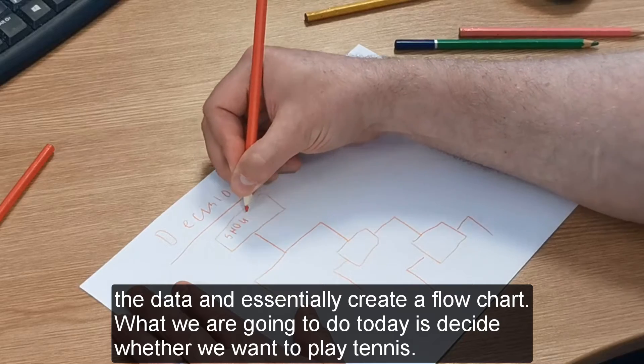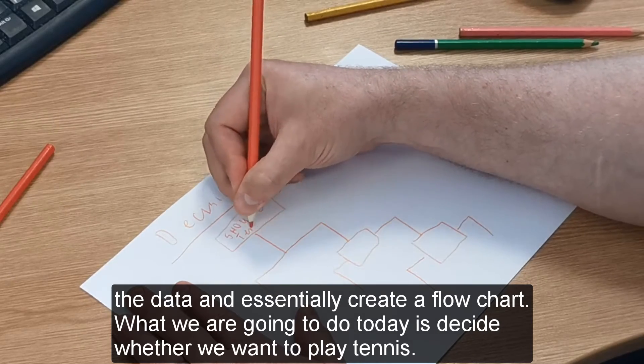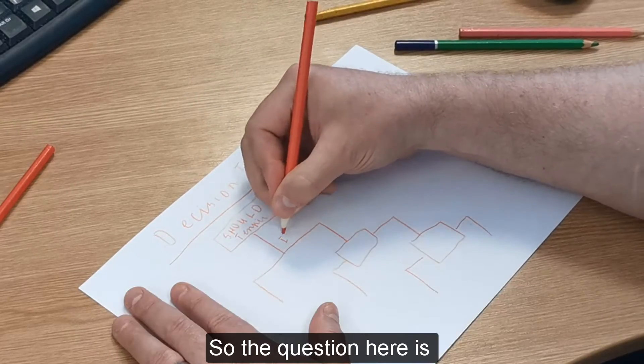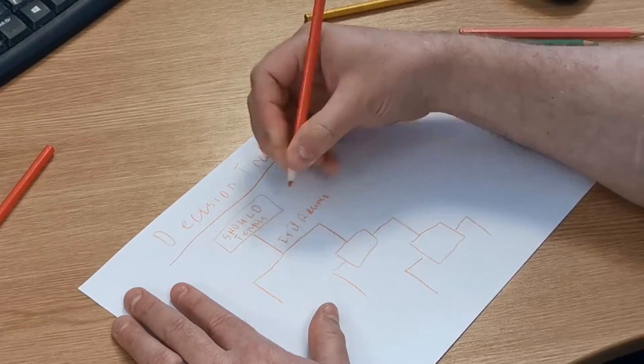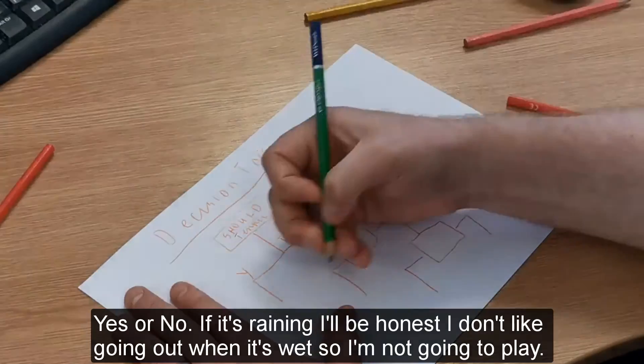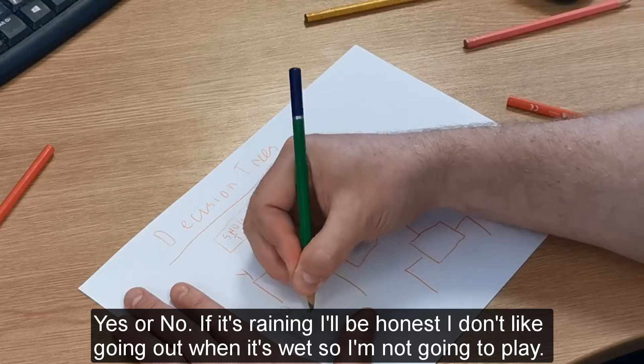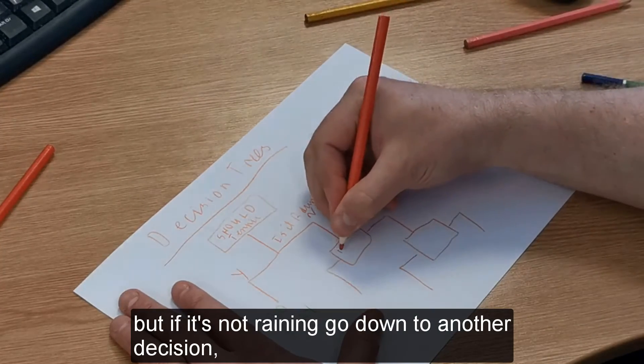You just make a decision based on the data and essentially create a flow chart. What we are going to do today is decide whether we want to play tennis. So the question here is: is it raining? If it's raining, I'll be honest, I really don't like going outside when it's wet, so I'm not going to play. But if it's not raining, we go down to another decision.